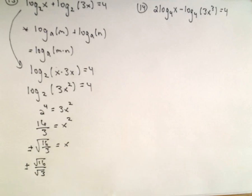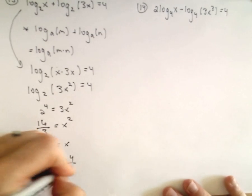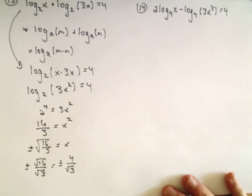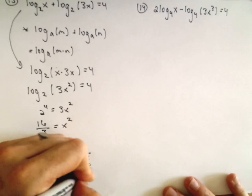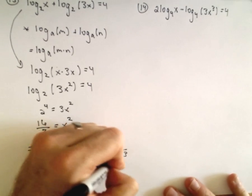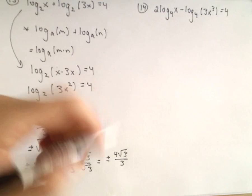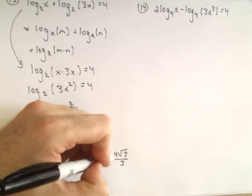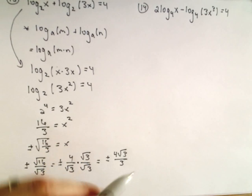So we can rewrite that as the square root of 16 over the square root of 3, which will give us 4 over root 3. And if you want to rationalize that, you can multiply the numerator and denominator by the square root of 3. So it says we have the potential solutions of positive 4 root 3 over 3 and negative 4 root 3 over 3.